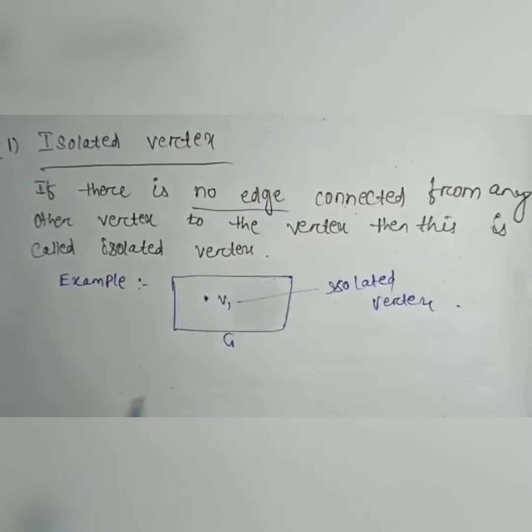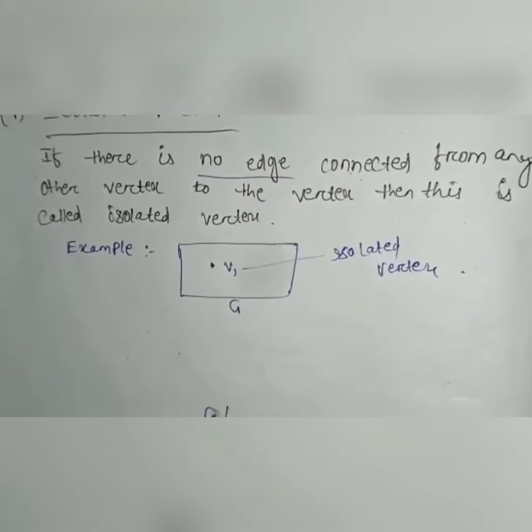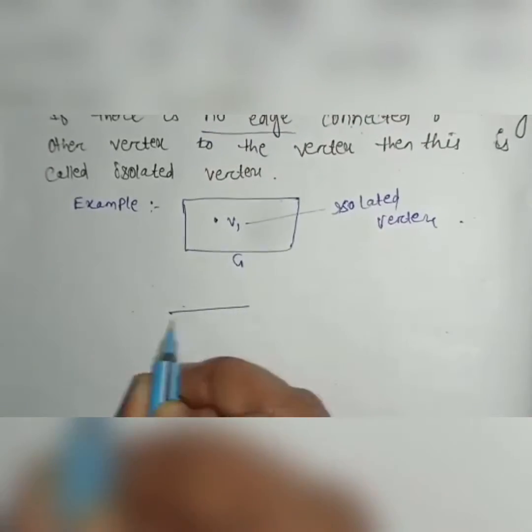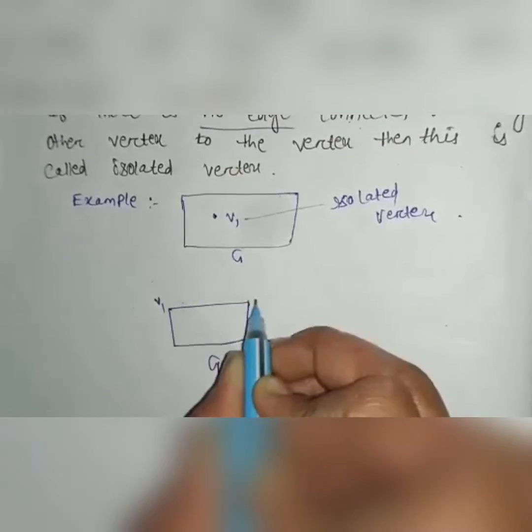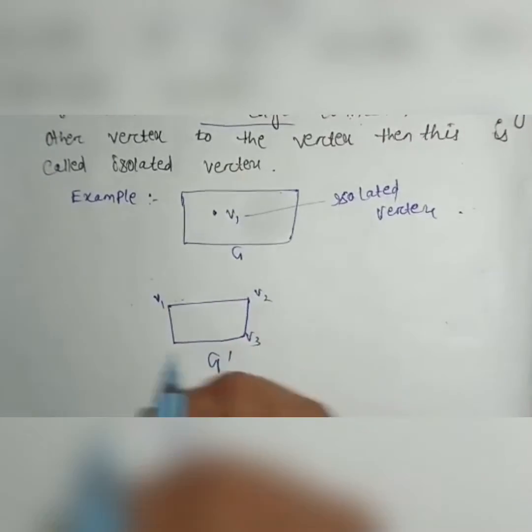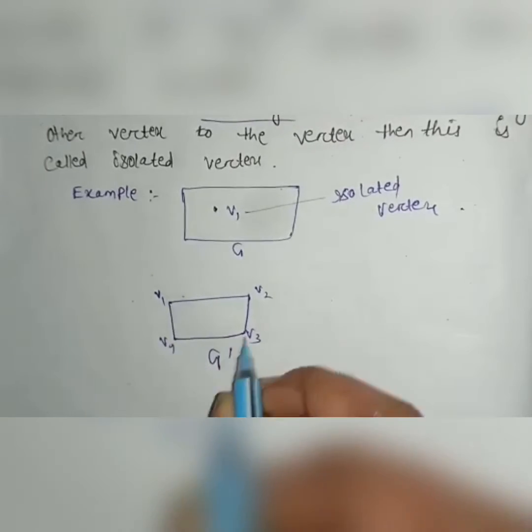If in a graph G there are V1, V2, V3, V4, four vertices present.